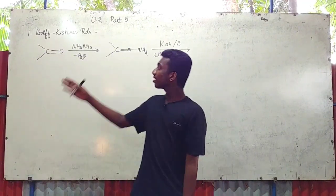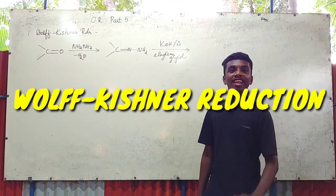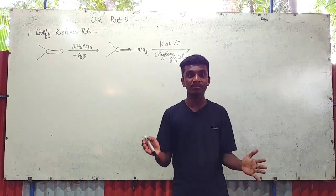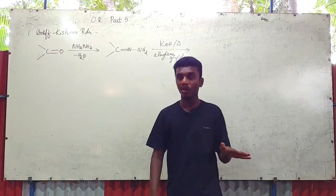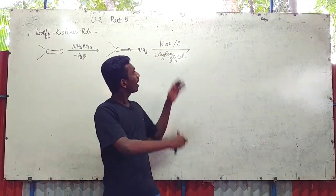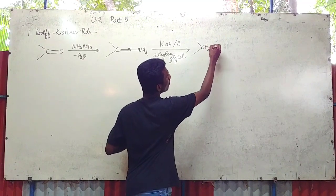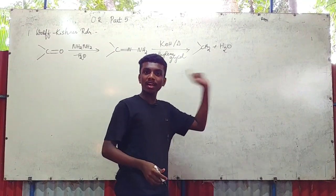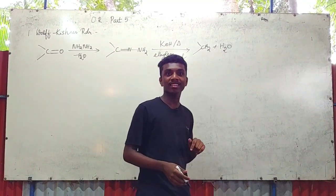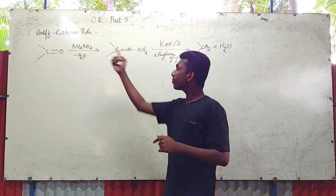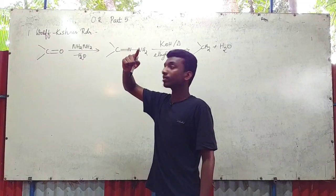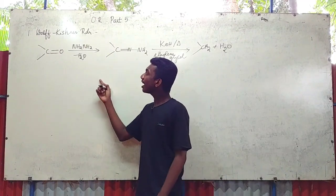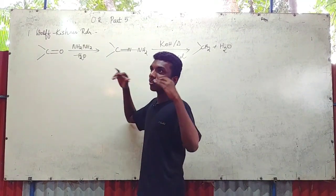Wolff-Kishner Reduction. What changes do we make compared to Clemmensen reduction? It is one extra step. The carbonyl group (C=O) is converted to CH2 — the same product — but via a different route. Step 1: we use hydrazine (NH2-NH2). Hydrazine is used in this reaction.